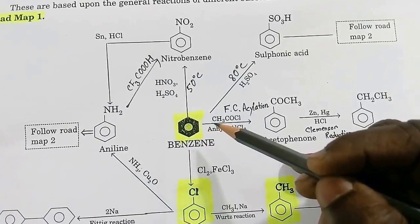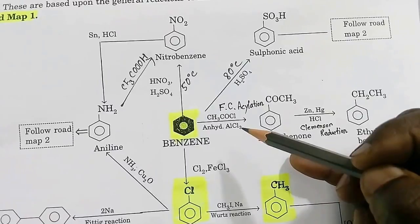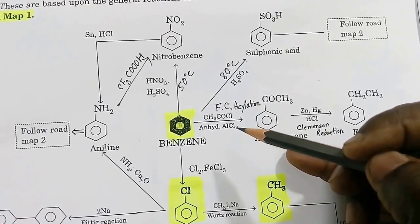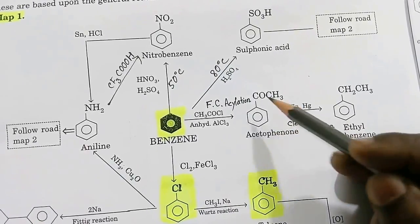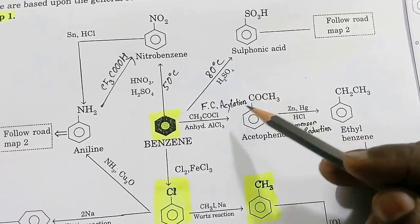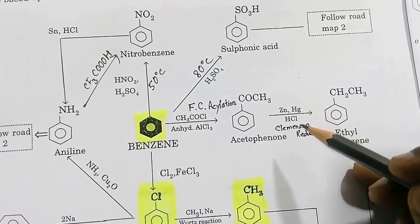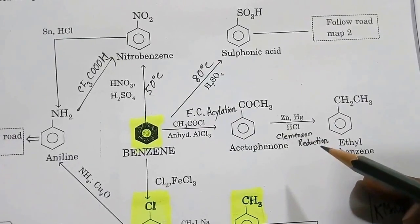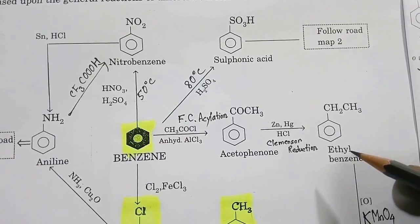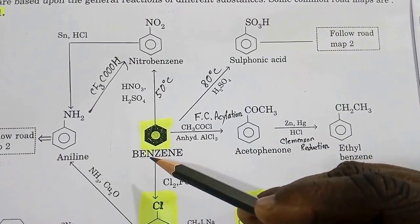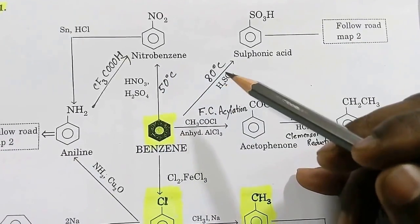If you take benzene and CH3COCl (acetyl chloride) in presence of anhydrous AlCl3, which acts as a Lewis acid, Friedel-Crafts acylation will take place and the product is acetophenone. Acetophenone has a carbonyl group, and that can be reduced by zinc amalgam in presence of HCl — this reaction is called Clemmensen reduction — and you get ethyl benzene.